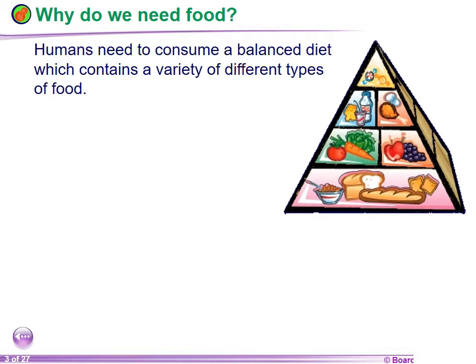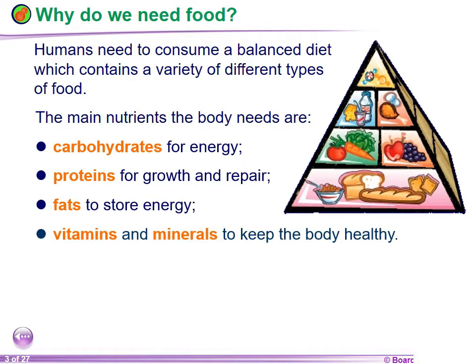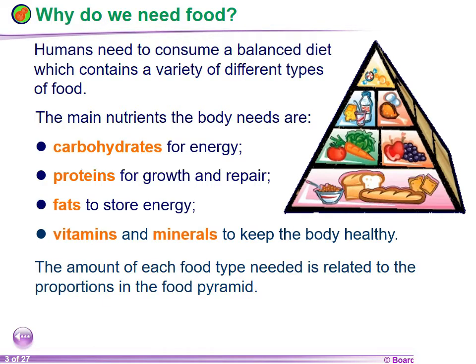The question is, why do we need food? Humans need to consume a balanced diet which contains a variety of different types of food. The main nutrients of the body are: carbohydrates for quick energy, proteins for growth and repair, and fats to store energy, plus vitamins and minerals to keep the body healthy.